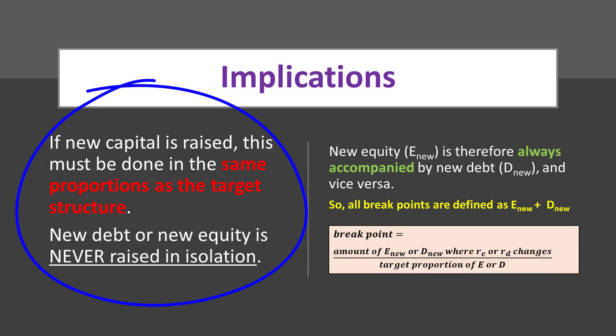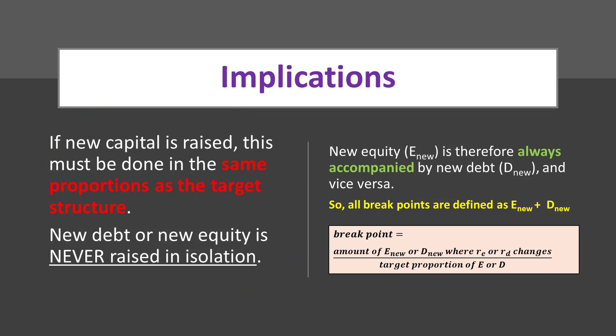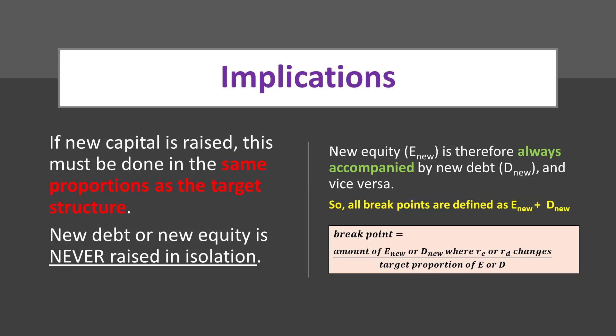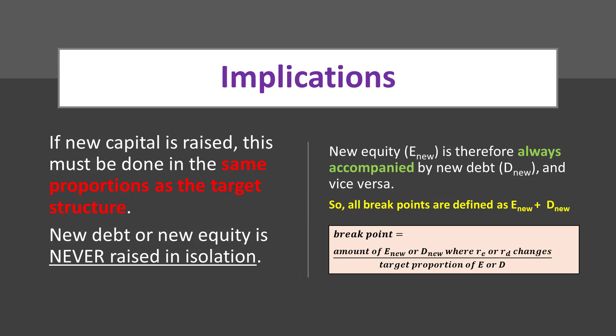These insights have the following implications. New capital is always raised in the correct equity-debt mix — there is never a situation in which new debt or new equity is raised by itself. Therefore, an issue of one capital component is always accompanied by the other. Recalling that break points are defined in terms of total capital, this means a break point can be calculated simply by adding the new equity to the new debt, because these have been issued in the correct proportions. However, there is an alternative way, being the equation on the screen, which achieves exactly the same result.